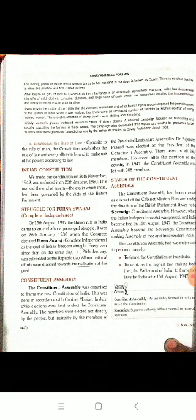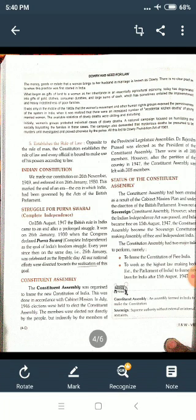Constituent Assembly: The Constituent Assembly was organized to frame the new constitution of India. Jab hame 15 August 1947 ko azadi mili, uske baad ek Samvidhan Sabha banai gai. This was done in accordance with the Cabinet Mission. In July 1946, elections were held to elect the Constituent Assembly. Members were elected not directly by the people but indirectly by members of the provincial legislature assemblies. Dr. Rajendra Prasad was elected as the President of the Constituent Assembly.